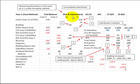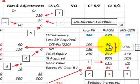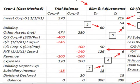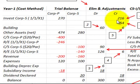The remaining eliminations for the cost method are the same as year one under the equity method. From the distribution schedule, we eliminate 90% of the subsidiary's equity: common stock of $90,000 and retained earnings of $126,000, for a total book value of $216,000. The entry debits common stock for $90,000 and retained earnings for $126,000, with the balancing $216,000 credit reducing the investment in the subsidiary.